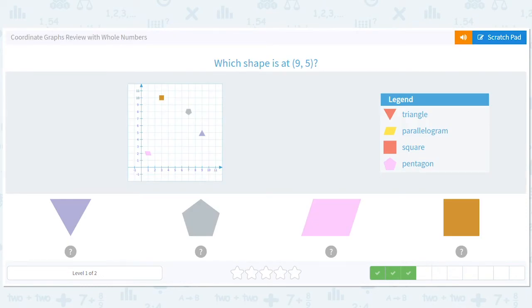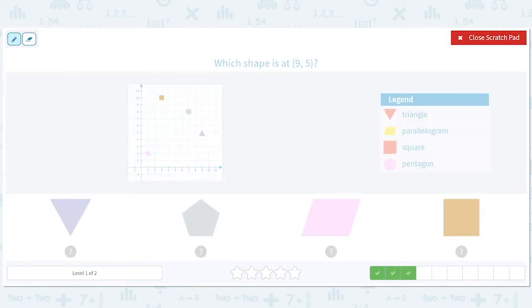Which shape is at (9,5)? That is a triangle. Now there's not really an upside-down triangle option, but that's fine. That's what we mean - nothing else really makes sense, right?